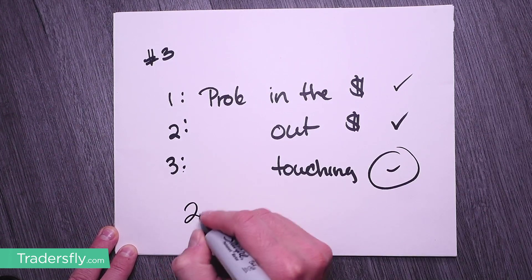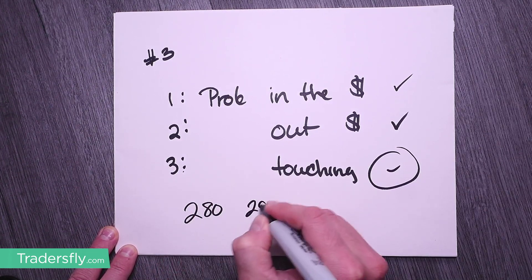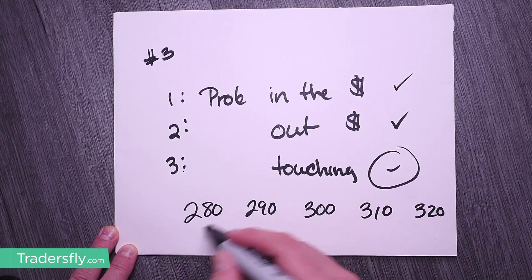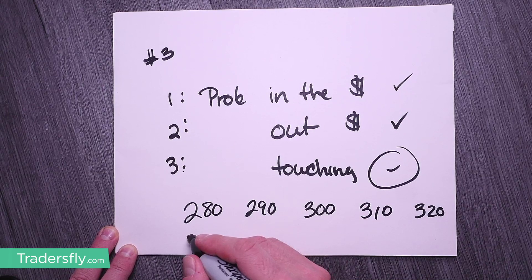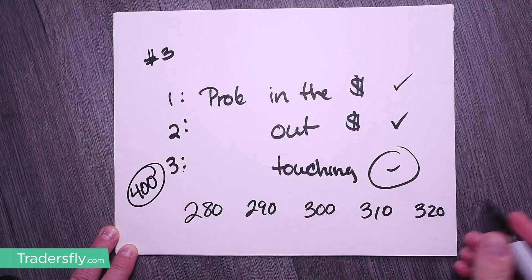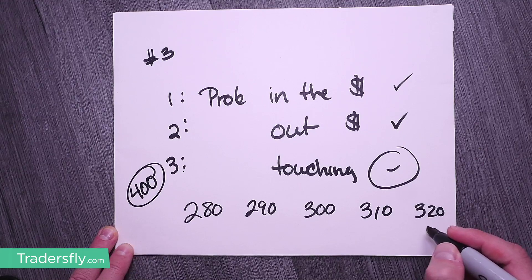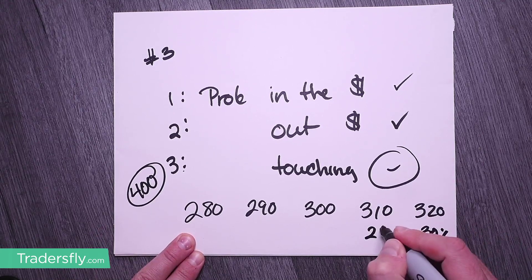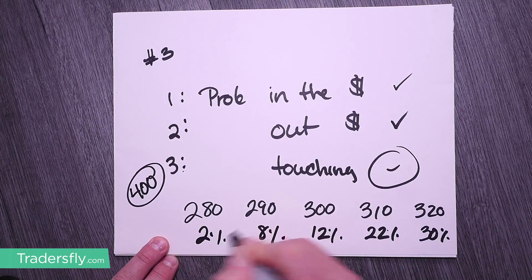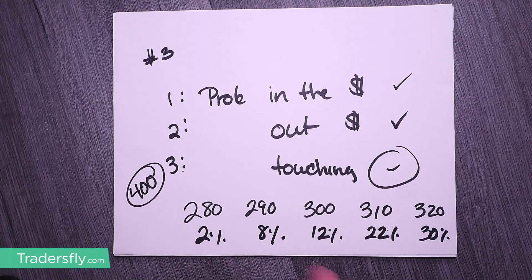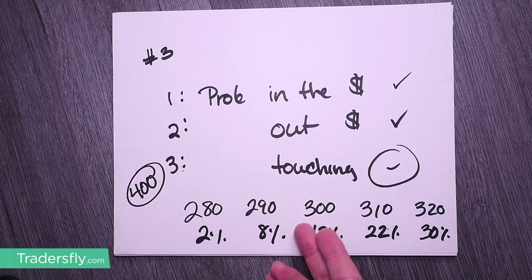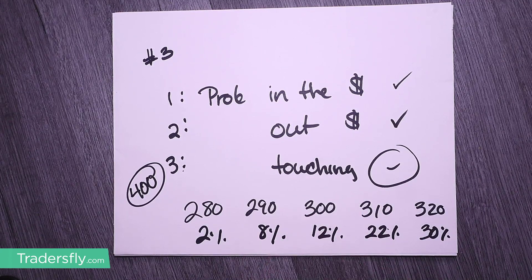All touching means is if you have prices of, let's say, 280, 290, 300, 310, and 320, maybe the probability of touching one versus the other is a little bit higher. Let's say the stock price is around 400 right now — the probability of touching 280 might be 30%, 22%, 12%, 8%, and 2%. So there are different probabilities. All touching really means is: the price goes over, touches that level, and kind of either moves up or down from that price — it gets close into that price range.